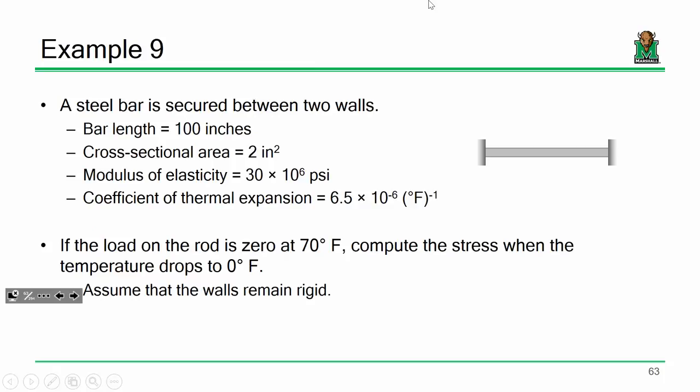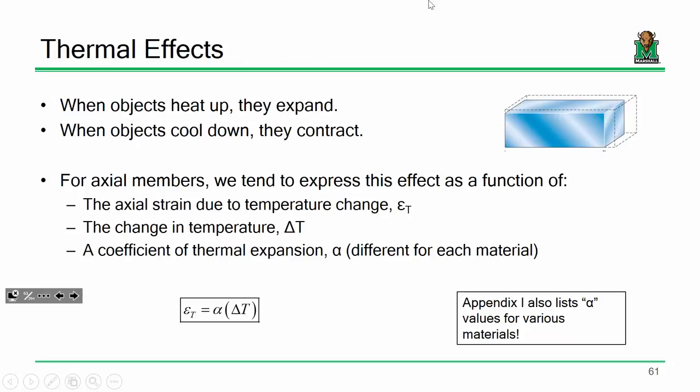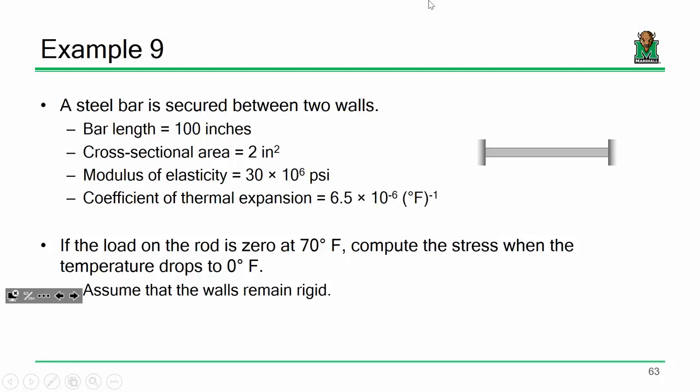Let's look at this example: I've got a steel bar sandwiched between two walls. The bar is 100 inches long, the cross-sectional area is 2 square inches, we're given a modulus of elasticity and a coefficient of thermal expansion. Look at the units — alpha is in degrees Fahrenheit to the negative one, similar to how hertz is one per second. So alpha multiplied by a change in temperature in degrees Fahrenheit yields no units, and strain is dimensionless — inches per inch.